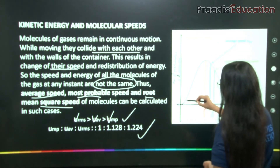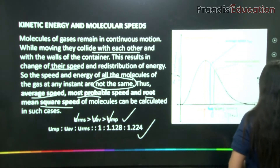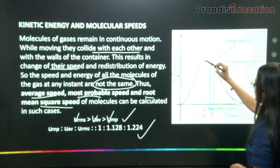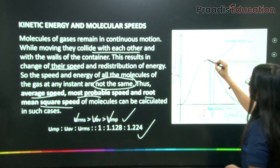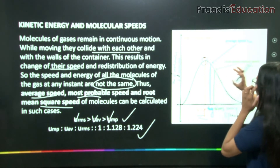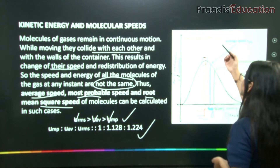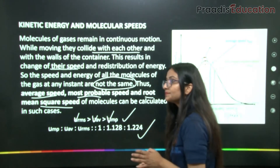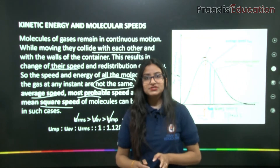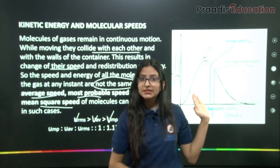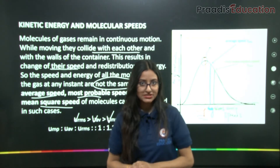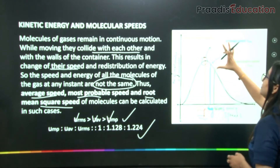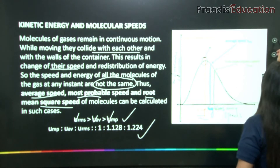From the graph, v_mp has the highest peak — meaning the maximum fraction of molecules possess this speed. v_most_probable means that most of the molecules exhibit this particular velocity. The order from the graph confirms: v_mp < v_avg < v_rms.